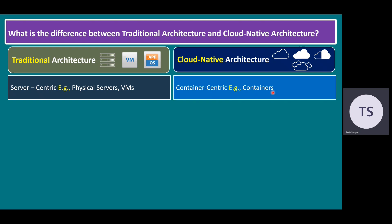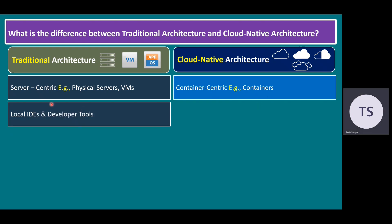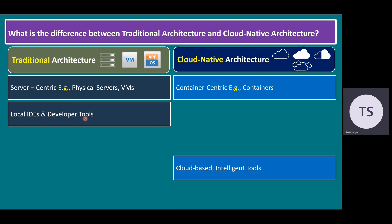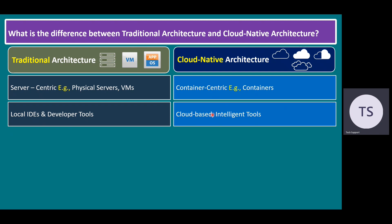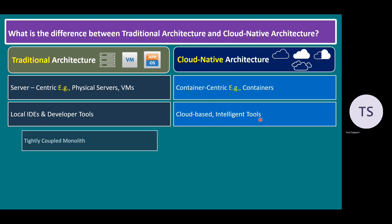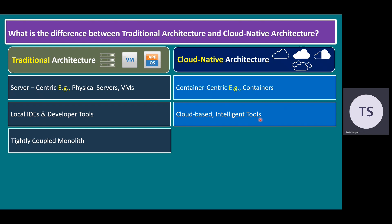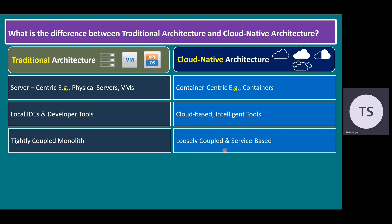As we know, containers run on Kubernetes. In traditional architecture, the local IDE — integrated drive electronics — uses developer tools. But in cloud-native architecture, we are completely using cloud-based tools and intelligent tools. Intelligent tools means threat analysis tools or data intelligence tools. Traditional architecture is tightly coupled monolithic — running one application on each server — or we use a tier-based architecture: web application, DB, and application servers. But cloud-native architecture is completely loosely coupled and service-based, that means microservice architecture.